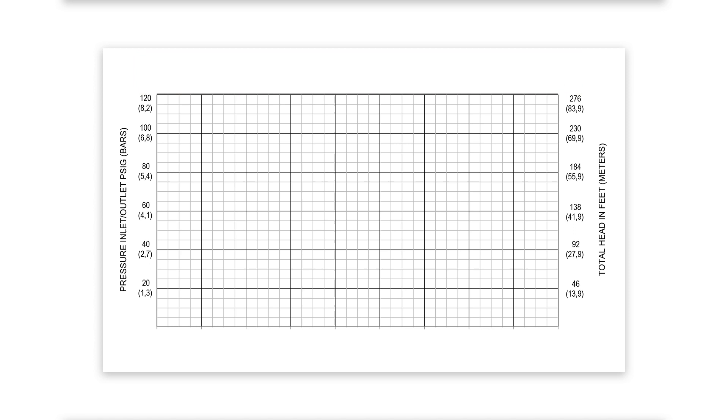Along the vertical axis is the pressure. In an AODD pump, pressure can correspond to two things: the air inlet outlet pressure in PSI and bar identified on the left-hand side, or the total head in feet and meters of water identified on the right-hand side.